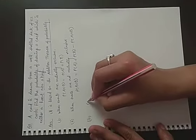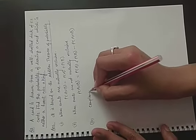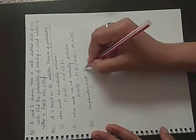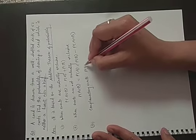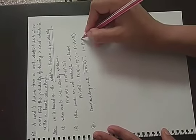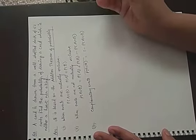And for neither we use complementary event that is P(A union B) complement is equal to 1 minus P(A union B).